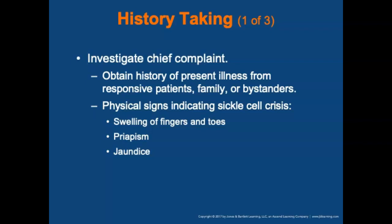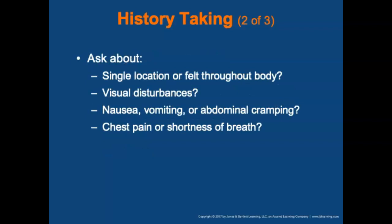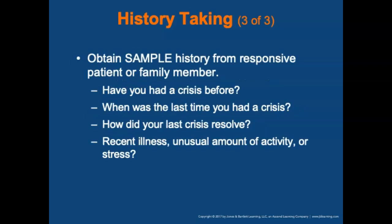For history taking, obtain a history from the responsive patient, family, or bystanders. Be alert for physical signs of sickle cell crisis such as swelling in the fingers and toes, priapism, or jaundice. Ask: Is the pain isolated to a single location or throughout the body? Is the patient having visual disturbances? Is the patient experiencing nausea, vomiting, or abdominal cramping? Is there chest pain or shortness of breath? For a SAMPLE history, ask: Have you ever had a crisis before? When was the last time, and how did it resolve? Have you had any illness, unusual activity, or stress lately?